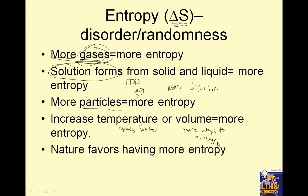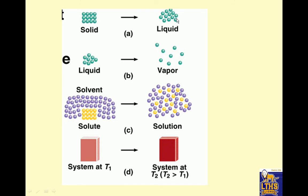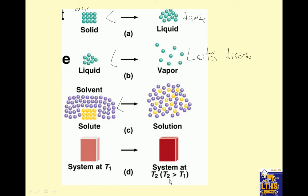Nature favors having more entropy — more disorder. Look at solids versus liquids: solids are very ordered, liquids move around more, and a vapor has lots of disorder. So: a liquid has more entropy than a solid; a vapor has more entropy than a liquid; a solution has more entropy than the solid and solvent separately. And hotter temperatures have more entropy.